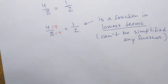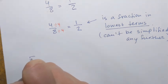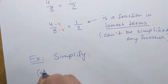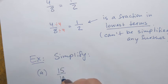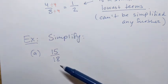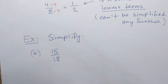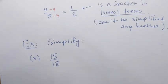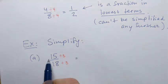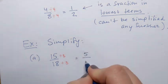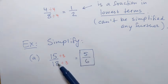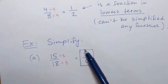Let's practice simplifying another fraction — simplify 15 over 18. To simplify, I need to find the largest number that divides both 15 and 18. That number is 3, which is actually the only number that divides both. So: 15 divided by 3 gives 5, and 18 divided by 3 gives 6. The fraction 5 over 6 is an equivalent fraction and it's in lowest terms.